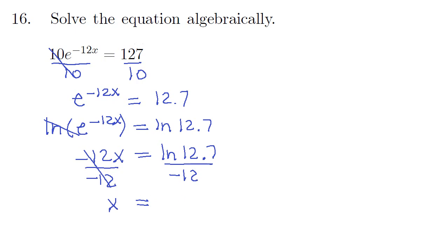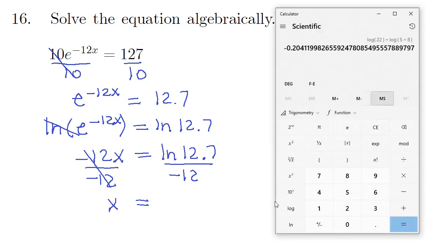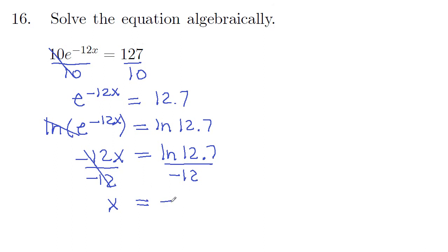So let's go ahead and key that in the calculator. So we've got 12.7, hit the ln, and then we are dividing by 12 negative. So negative 0.212 to three decimal places.